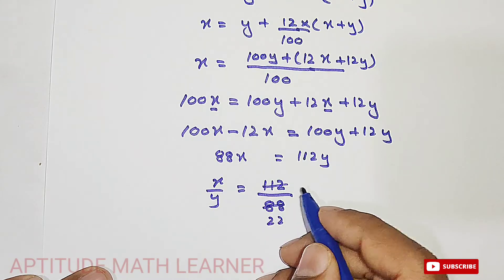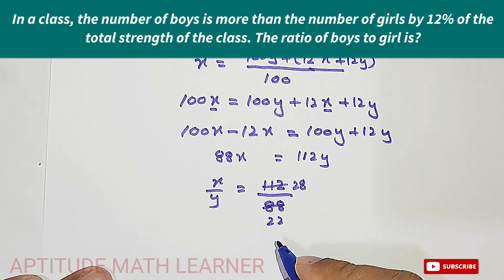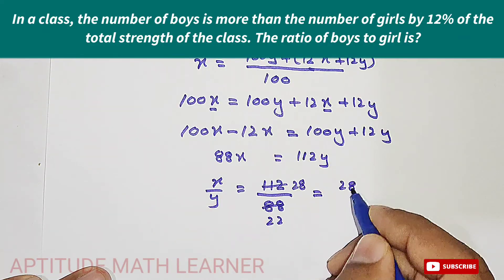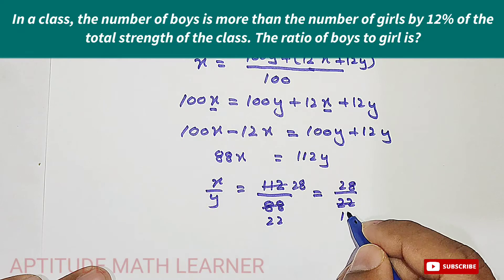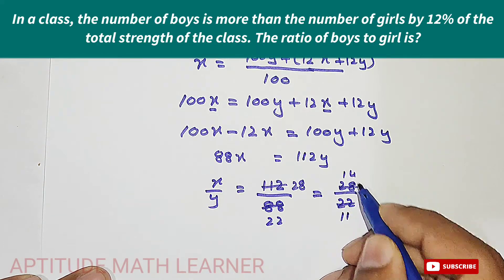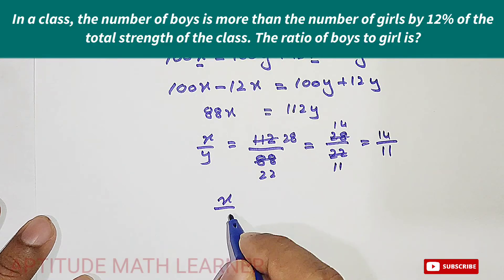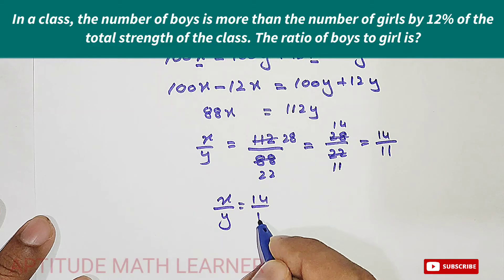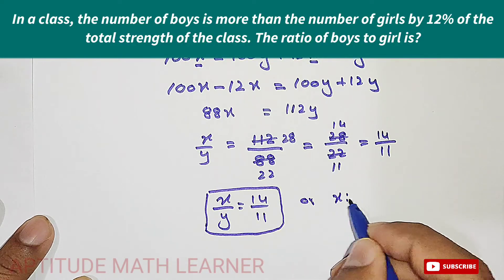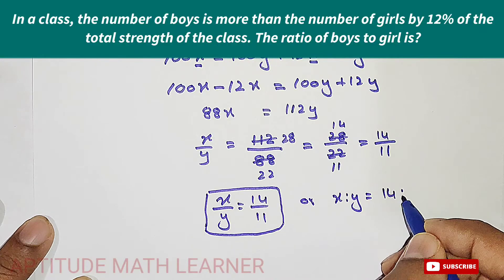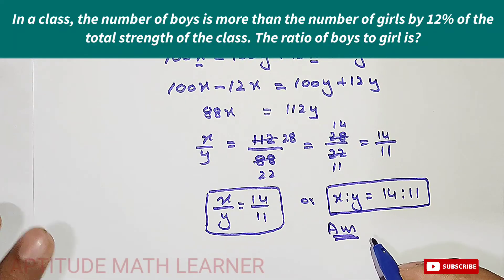Dividing by 4: 112/88 = 28/22. Dividing further by 2: 28/22 = 14/11. So the ratio of boys to girls is 14:11. I hope you have completely understood.